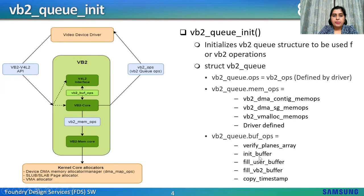This interface sets all queue parameters — if it's multiplanar, if the queue is output — and also the queue buffer ops, which will be the V4L2 buffer ops. The important callbacks include: init_buffer, which initializes extra data in the struct VB2 buffer (for V4L2, this is struct VB2_V4L2 buffer); fill_user_buffer, which fills the user space structure (for V4L2, this is struct V4L2 buffer); fill_vb2_buffer, which fills the VB2 buffer from a user space structure; and copy_timestamp, which copies the timestamp structure to the VB2 buffer.